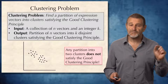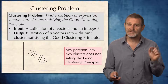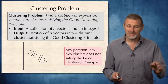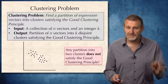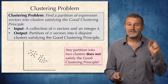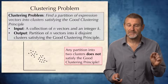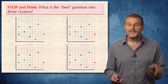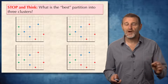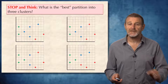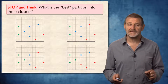This means that the problem we just formulated, while well-defined computationally, is essentially useless for most practical datasets, because most datasets do not have a partition satisfying the good clustering principle. Thus, we have to figure out how to construct a new objective function for clustering that will generate a solution for any dataset.